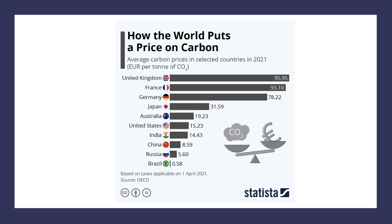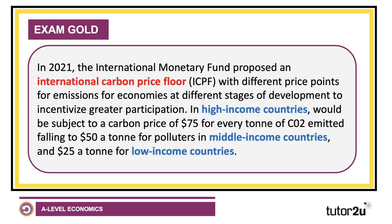Sweden is the country with the highest carbon taxes in the world. In 2021, the International Monetary Fund (IMF) proposed an international carbon price floor with different price points for economies at different stages of development. They suggested that for high-income countries like Germany, Japan, the UK, and the USA, there should be a carbon price of €75 per tonne of CO2. For middle-income countries like Mexico, China, and Poland, €50 per tonne. And for low-income countries — perhaps Bangladesh, Vietnam, Malawi, or Zambia — the figure should be €25 per tonne. So the IMF is arguing for a graded progressive system where the carbon tax would bear most heavily on high-income rich countries.